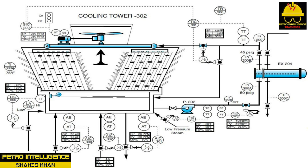Step 3 — check equipment and instrumentation; stroke control valves 0–100%, check lineups, etc. Step 4 — establish level in water basin and set LIC-300 at 75% and place system in auto. Step 5 — sample water in basin and send to lab. Step 6 — line up pump 302 from basin to pump to exchanger X204 to cooling tower 302 water distribution system. Step 7 — line up EX204. Step 8 — start pump 302 and monitor PI-300A at 50 PSIG and PI-300B at 45 PSIG.